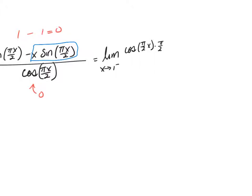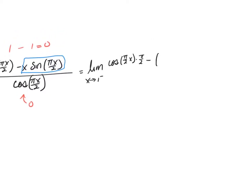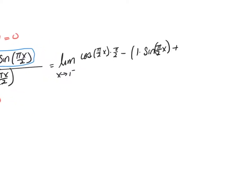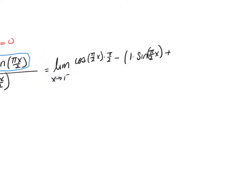This part right here requires the product rule in the numerator. I'm going to ignore the denominator because it's L'Hopital's — so I'm not using the quotient rule, but I do have to use the product rule. The derivative of x first is 1, multiplied by sine(πx/2), plus x multiplied by the derivative of sine, which is cosine(πx/2), then multiplied by the derivative of the angle, π over 2.